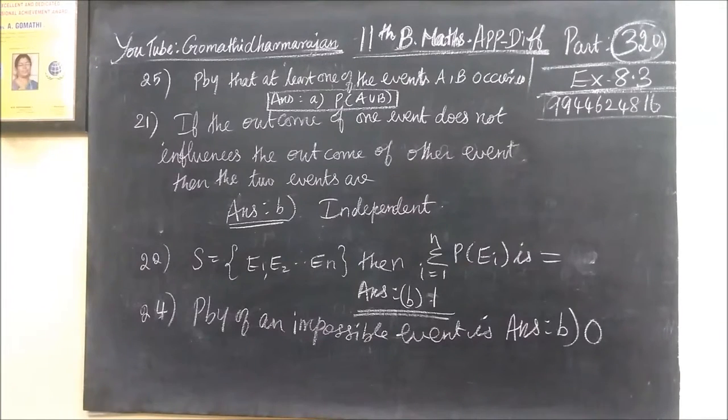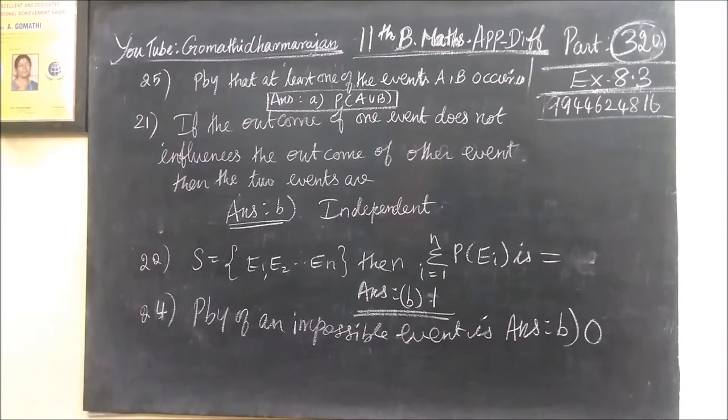And coming to the last one, question number twenty-one. If the outcome of one event does not influence the outcome of other event, then the two events are independent event. If the outcome is separate event, then the event is independent event.